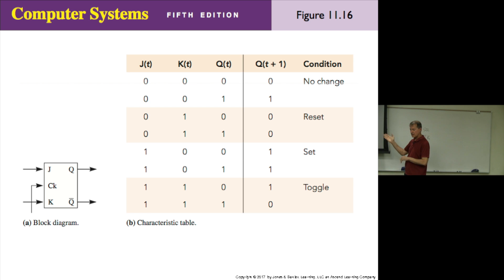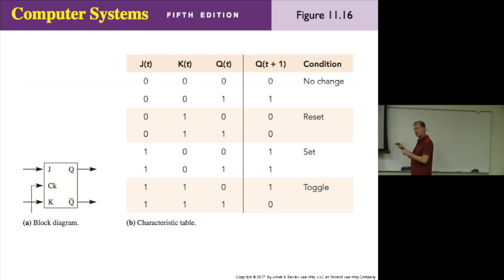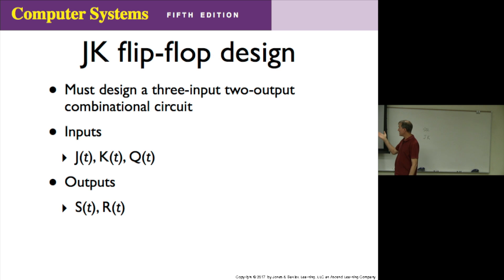At the end of class last time, we said there is a way to construct a JK flip-flop out of an SR flip-flop, and do you remember the design sequence we used? There is a systematic procedure — we don't just guess and do trial and error. Do you remember what that procedure is? A design table? Yes. Actually there were several different tables — let's review those. Here is the JK flip-flop design problem: we must design a 3-input, 2-output combinational circuit.